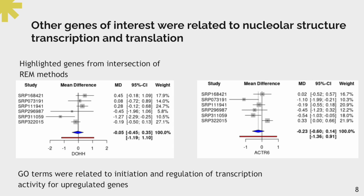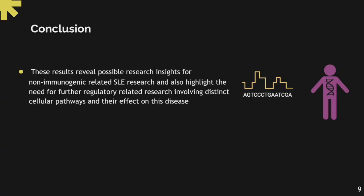Additionally, we found other genes of interest related to nucleolar structure, transcription, and translation. Some of the highlighted genes from the intersection of both random effects model methods were precisely related to these functions. GO terms were also related to initiation and regulation of transcription for the upregulated genes in the combined approach meta-analysis. In conclusion, these results revealed possible research insights for non-immunogenic-related lupus research, and highlight the need for further regulatory research involving distinct cellular pathways and their effect on the disease.